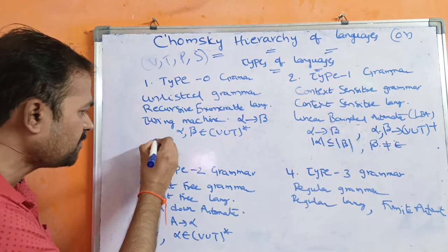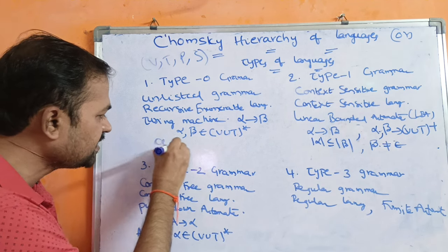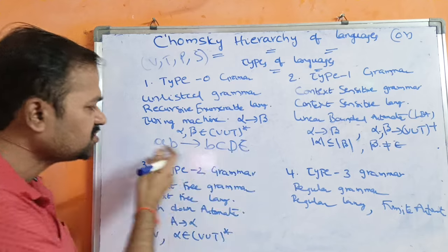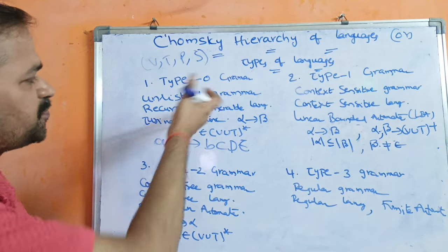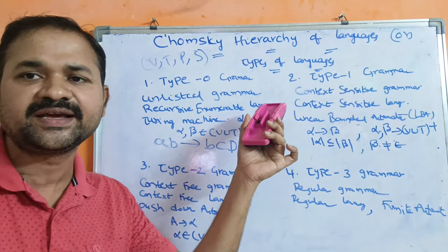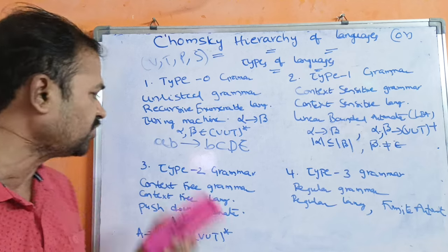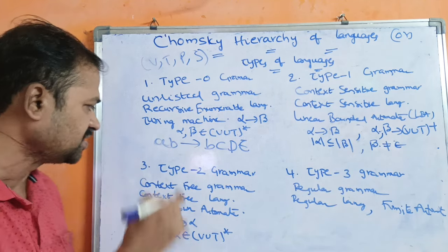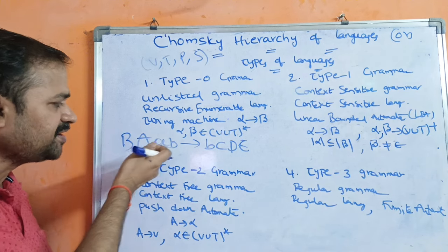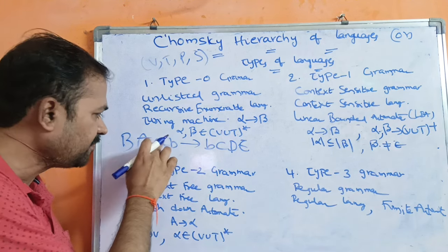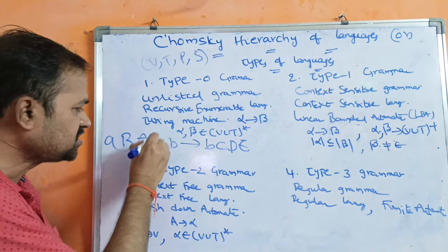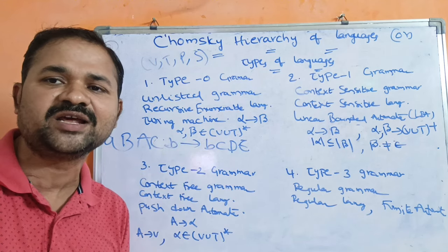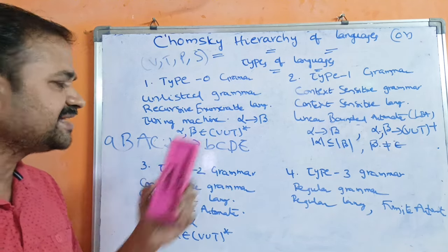Let us take some example. AB implies BCDE. So this is a recursive enumerable language production, because we can have any number of non-terminals and terminals. We can write some non-terminals before this or between this. This is also a valid production. So we can write any number of terminals and non-terminals in LHS and RHS.